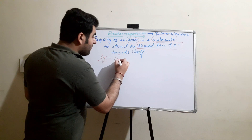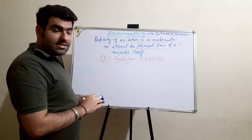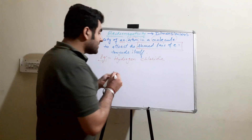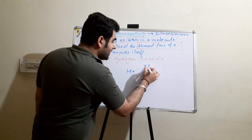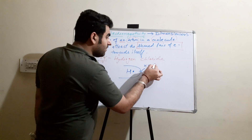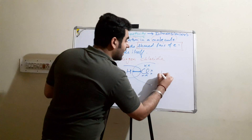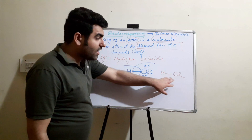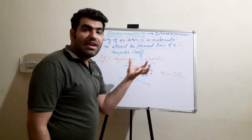Let us take the example of hydrogen chloride. Both hydrogen and chlorine are non-metals, so the bond formed between them will be a covalent bond. Hydrogen has one electron in its outermost shell and chlorine has seven electrons in its outermost shell. They will share electrons — the duplet of hydrogen will be complete and the octet of chlorine will be complete — forming the H–Cl bond. Out of these two atoms in the molecule, one atom is capable of attracting this shared pair of electrons towards itself.